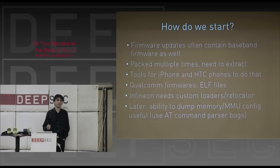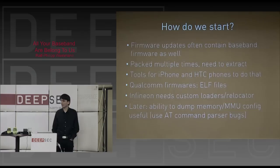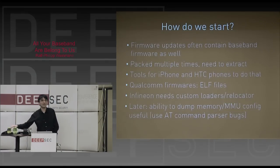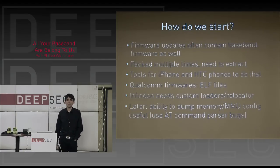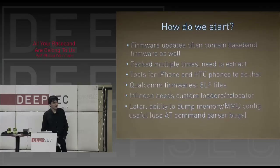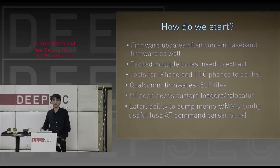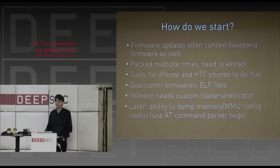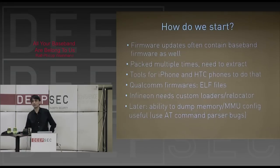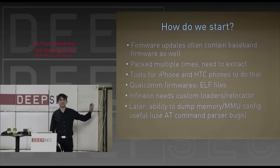For Infineon, you need a custom loader and relocator, which is somewhat painful. It's easier on first-generation devices because there's lots of information available. On the iPhone 4, you have to read the ebl.fls file to see how relocation is done if you want to do this statically. The other option is that people use bugs to unlock phones via soft unlocks — you can use the same path to inject your own code into the baseband through a bug in the AT command parser, and hence you can gain information about the MMU configuration or dump regions of memory.